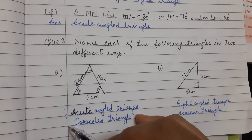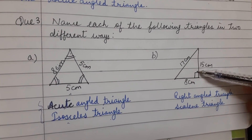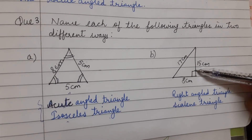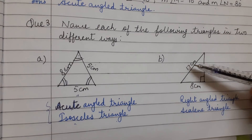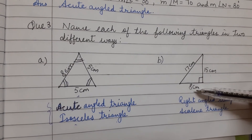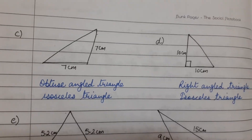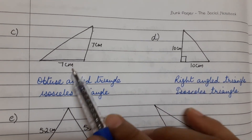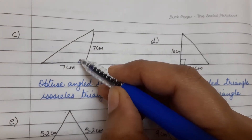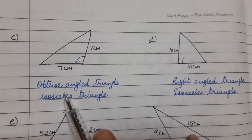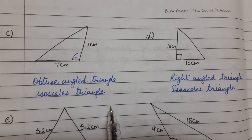For the second triangle, one angle is 90 degrees — right angled triangle — and all three sides are different — scalene triangle. For part C, the angle is obtuse — obtuse angled triangle — and two sides are of equal length — isosceles triangle.